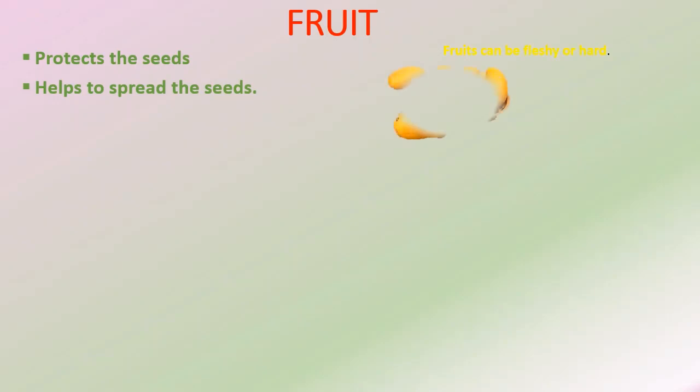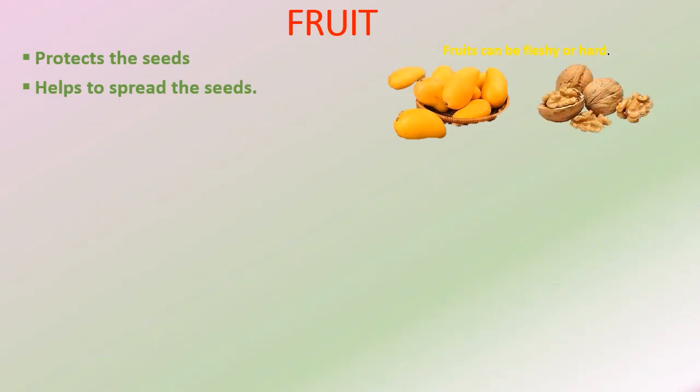The fruit is the fleshy or dry ripened part of a plant which encloses the seeds. The fruit protects the seed and also helps to spread them by attracting small animals and birds. A fruit can be either fleshy, as in mango, or hard and dry, as in walnut.